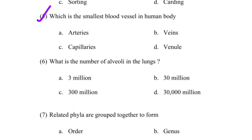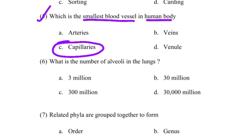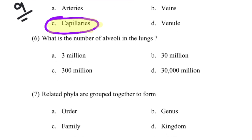Which is the smallest blood vessel in the human body? From the class 9 biology textbook, the smallest blood vessel is the capillary. Next question: What is the number of alveoli in the lungs? The answer is 300 million.